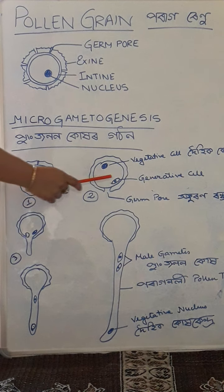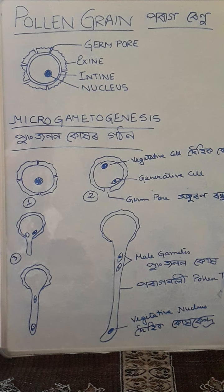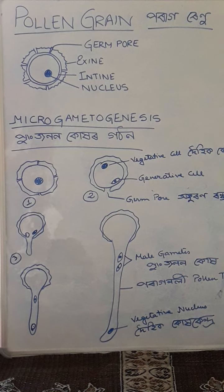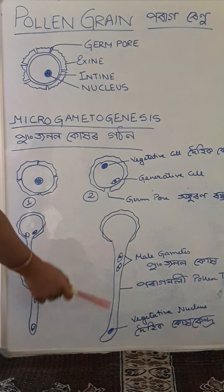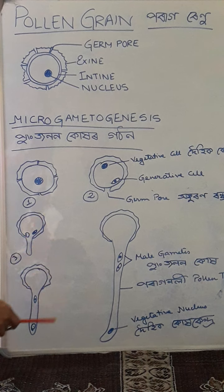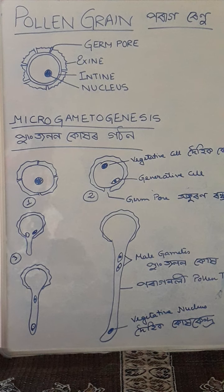The pollen tube is very thin, so in order to adjust to the size of the pollen tube, the male gametes are spindle-shaped and eye-shaped. Because of this shape, they can easily pass through the tube. So the male gamete formation involves a vegetative cell, a tube nucleus, and two male gametes.